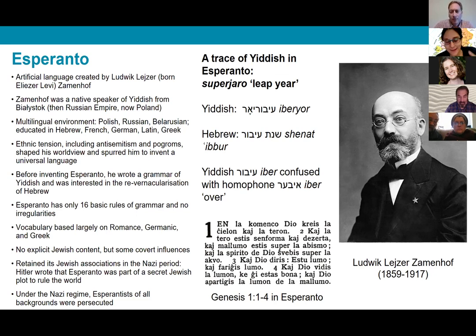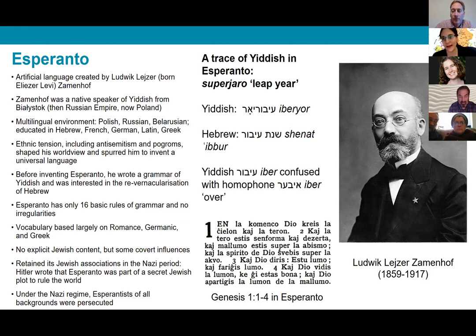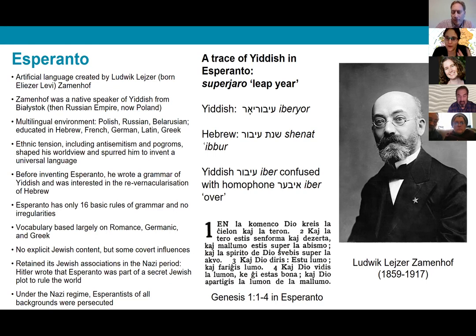After its creation, Esperanto retained its Jewish associations into the 20th century — so much so that in a negative way, in the Nazi period, Hitler thought that Esperanto was part of a secret Jewish plot to rule the world, and Esperantists of all backgrounds, whether Jewish or non-Jewish, were persecuted. We thought that even though you wouldn't typically see Esperanto in a book on Jewish languages, we wanted to include it because it has a really interesting Jewish perspective and is part of the wider picture of the relationship between Jews and language, particularly in the diaspora.